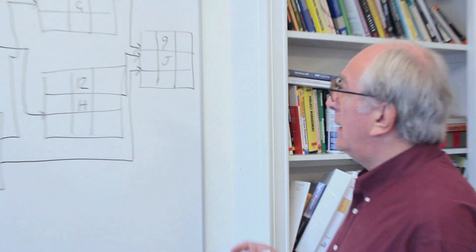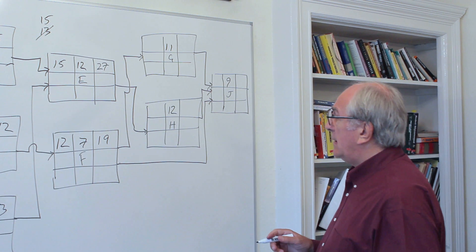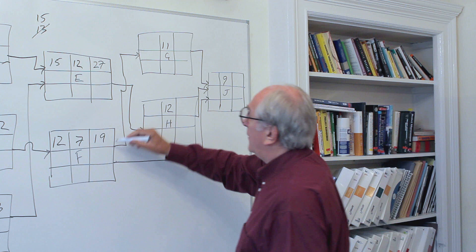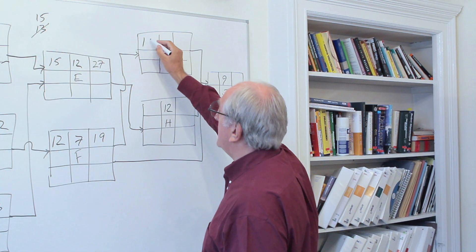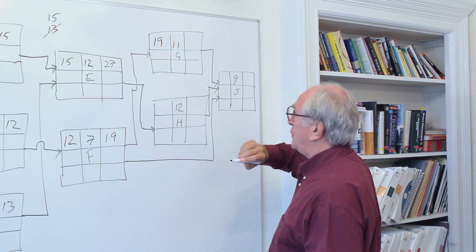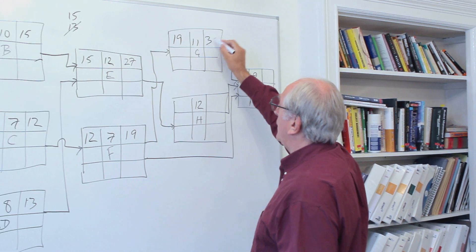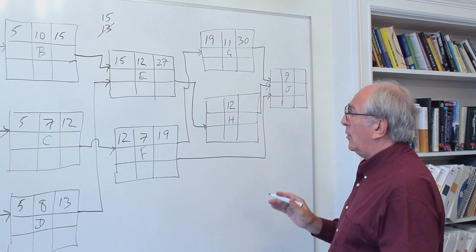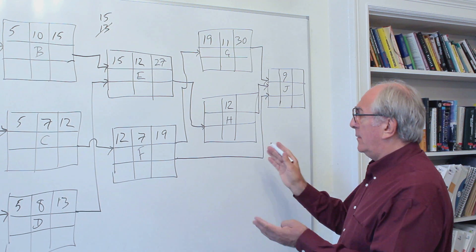We can move on to some other activities here. I suggest that we do the calculation for G, which says now we have to have F done before we can do G. So that gives us the early finish of F, 19, is the early start of G. That gives us an early finish of 30.